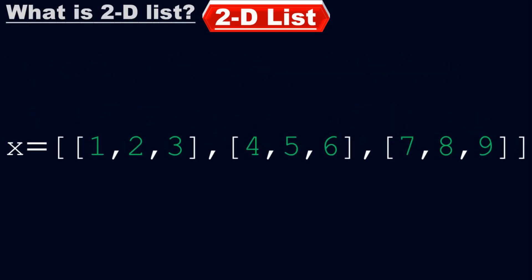This is a typical example for a two-dimensional list. Look at here, x is the variable which equals to this expression. Our main list is here, from here up to here. This is my main list. Now, the elements of this list are lists by themselves.